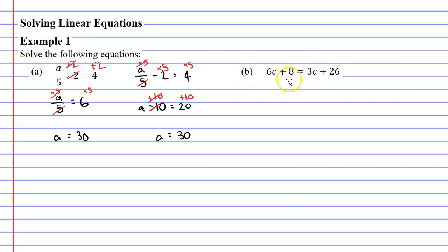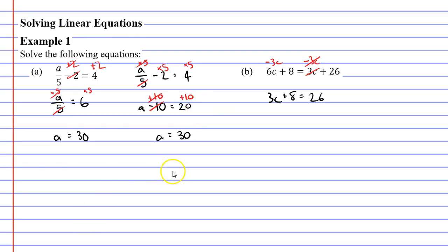You may notice that we've got pronumerals on both sides of the equal sign — we've got a 6C on the left-hand side and a 3C on the right-hand side. The best thing to do is to subtract 3C. The reason is it's going to cancel out the 3C on the right-hand side, so we must subtract 3C on the left-hand side as well. Now 6C minus 3C is 3C, and by subtracting this 3C you've made your life a lot easier because now we've only got one term with a pronumeral.